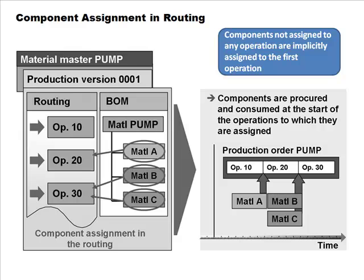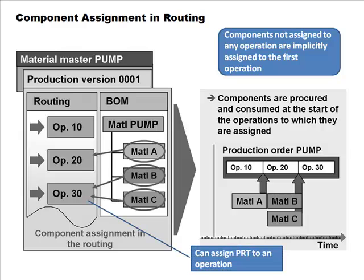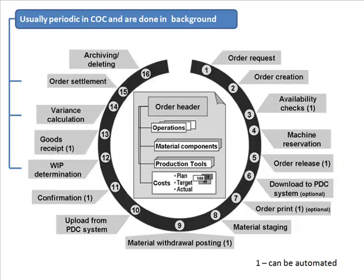Components not assigned to any operation are assumed to be needed at the start of manufacturing — MRP will simply assume those are needed at the very beginning. PRTs can be assigned to a specific operation in the routing; they're not part of the BOM because the BOM is strictly what goes into the product, other than document items. That concludes the first lesson.